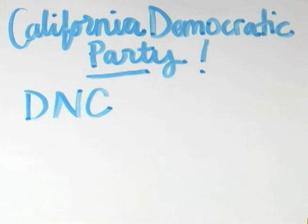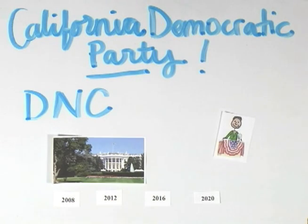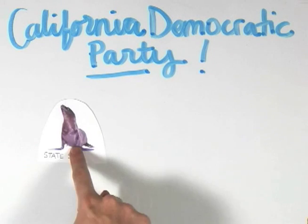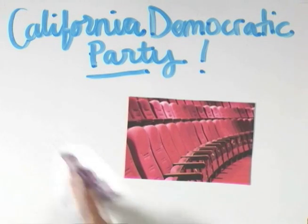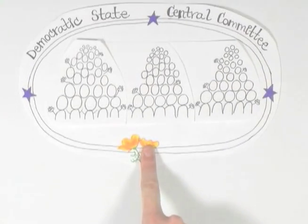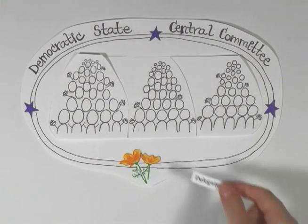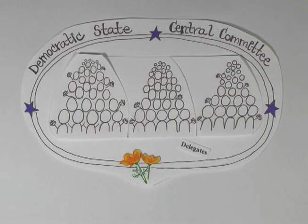You've probably heard about the Democratic National Committee and the convention it has every four years to select a Democratic nominee for president. We also have a state party convention every year to make decisions about the California Democratic Party. The group that meets at the state party convention is known officially as the Democratic State Central Committee, or DSCC, and members of the DSCC are often called delegates to the state party.